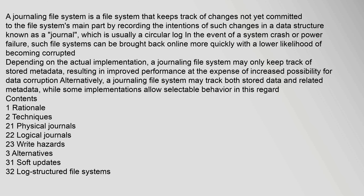A journaling file system is a file system that keeps track of changes not yet committed to the file system's main part by recording the intentions of such changes in a data structure known as a journal, which is usually a circular log in the event of a system crash or power failure. Such file systems can be brought back online more quickly with a lower likelihood of becoming corrupted. A journaling file system may only keep track of stored metadata, resulting in improved performance at the expense of increased possibility for data corruption.